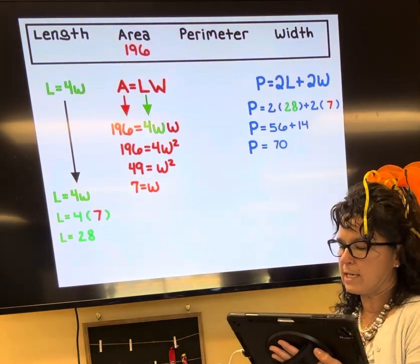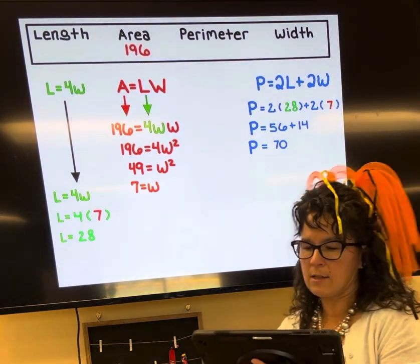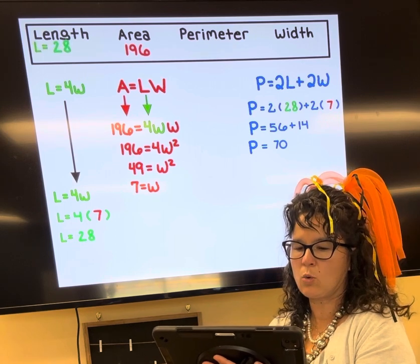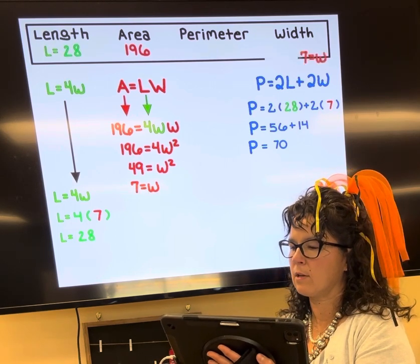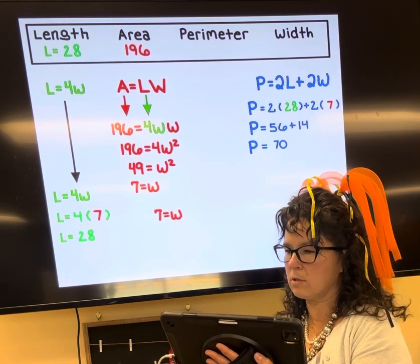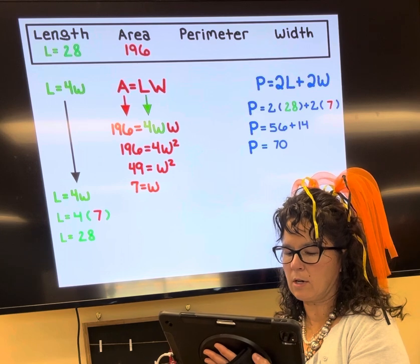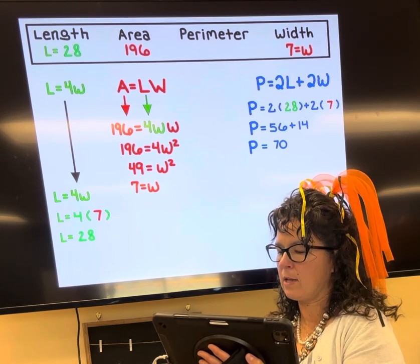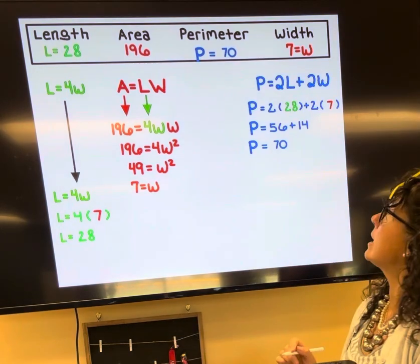So we now know that the length is 28, we know the width is seven, and the perimeter is 70.